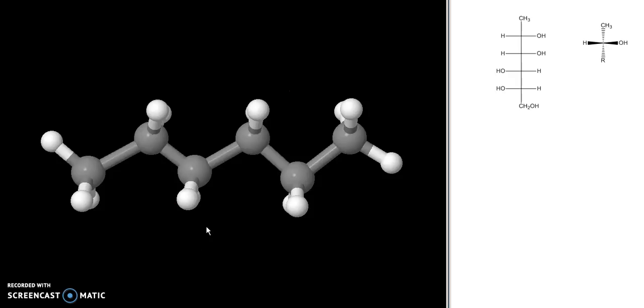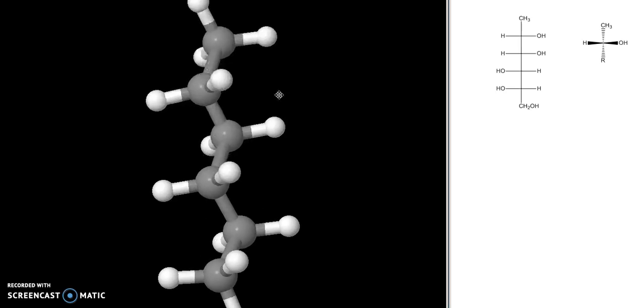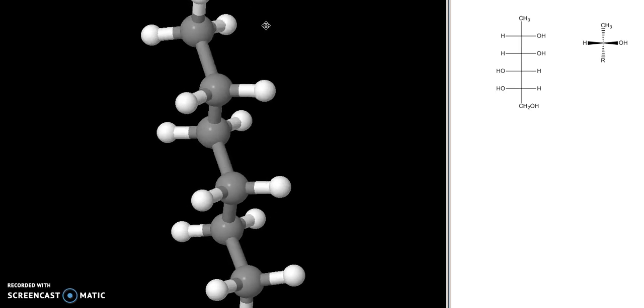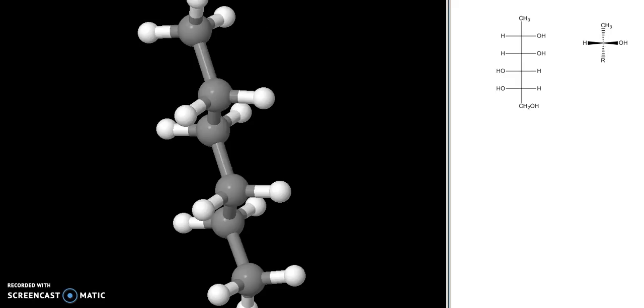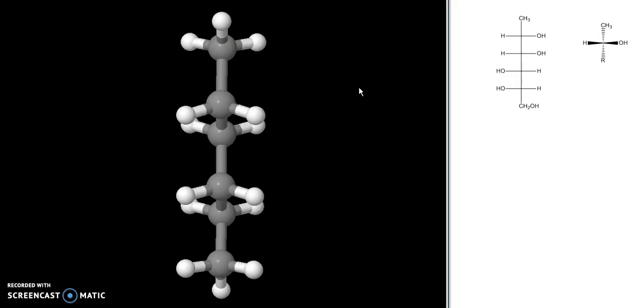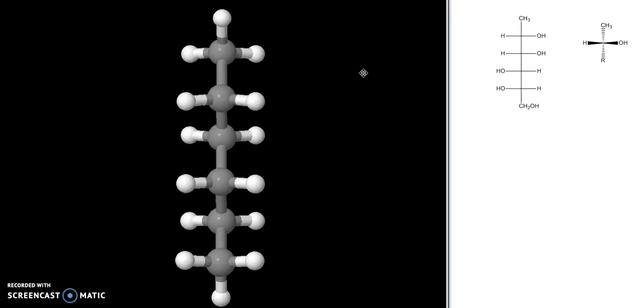Start with just the carbon structure. This has six carbons in a row. I'm going to rotate this so that it is going up and down, just like my Fischer projection. This is my first methyl right here. So the first carbon that I need to assign positions for groups is this second one right here.